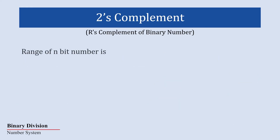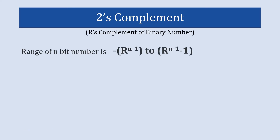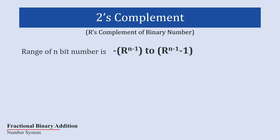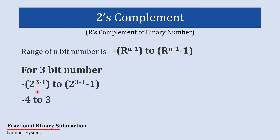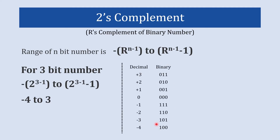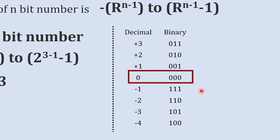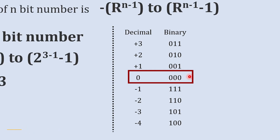Using 2's complement with an n-bit number, you can represent numbers in the range from minus (2 raised to n minus 1) to (2 raised to n minus 1, minus 1). For a 3-bit binary number, we can represent the range from minus 4 to plus 3. Observing this table gives a clear idea about the full range, and importantly there is no issue of dual zero representation in 2's complement.